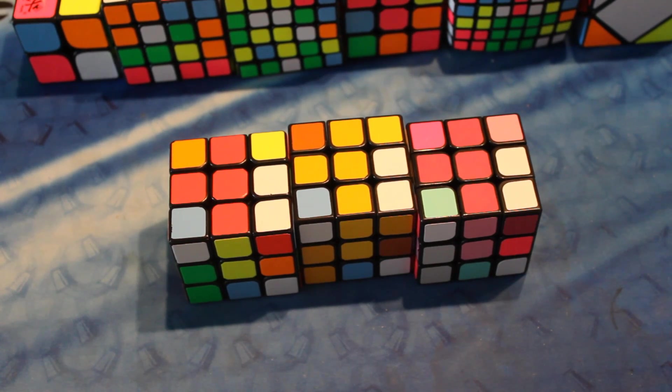There is another colorblindness, but I did not get a cube for it. It is monochromacy. Monochromacy is black and white, and it only occurs in every 1 and 33,000 people.